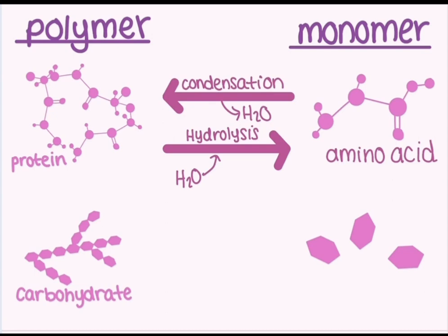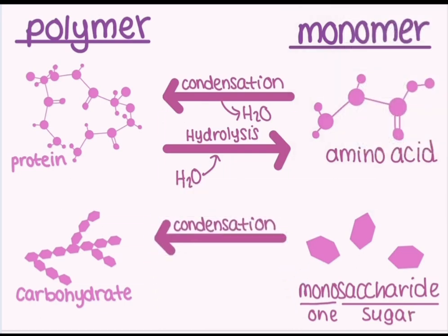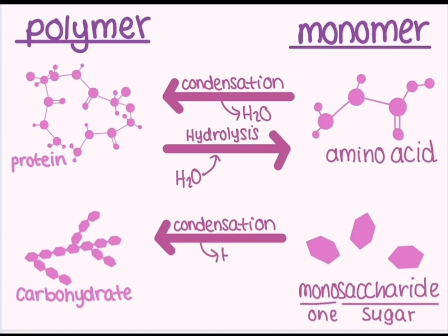Moving on now to our fourth and final polymer, carbohydrates. So carbohydrates are long chain polymers made up of multiple monosaccharides, translated from Greek to mean single, mono, and sugar, saccharides. So a monosaccharide is a single sugar. So molecules like glucose, fructose, and galactose, they are examples of monosaccharides that you might already be familiar with. Hopefully we have the hang of it by now. So monosaccharide to carbohydrate, so monomer to polymer, we have a series of condensation reactions, and then carbohydrate to monosaccharide, so polymer back to monomers, that is hydrolysis.